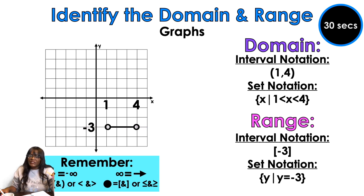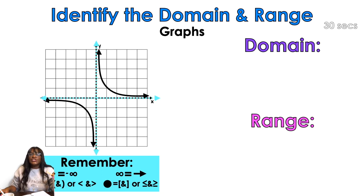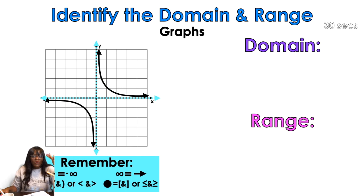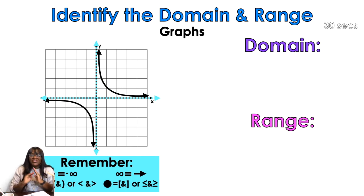The last two are tricky! Those blue dotted lines are called asymptotes. Asymptotes are lines that the function approaches but never touches. Those arrows are not going to go above or below those blue lines — the blue lines are like boundaries. Think about it — it's a challenge.